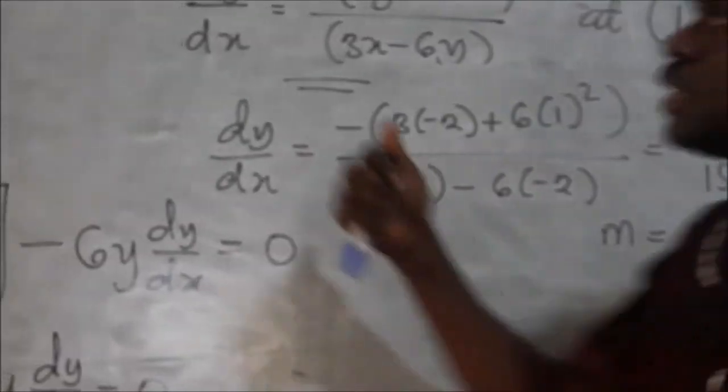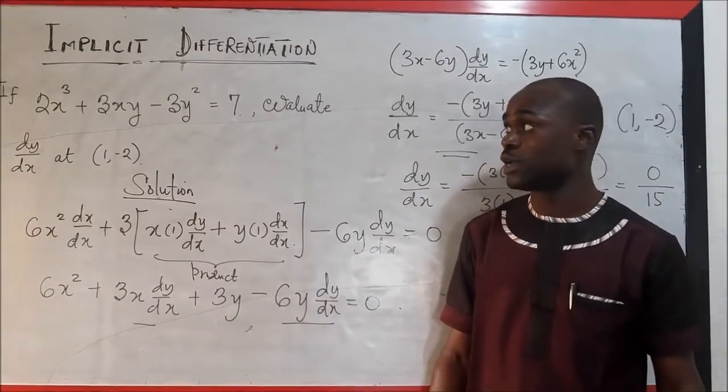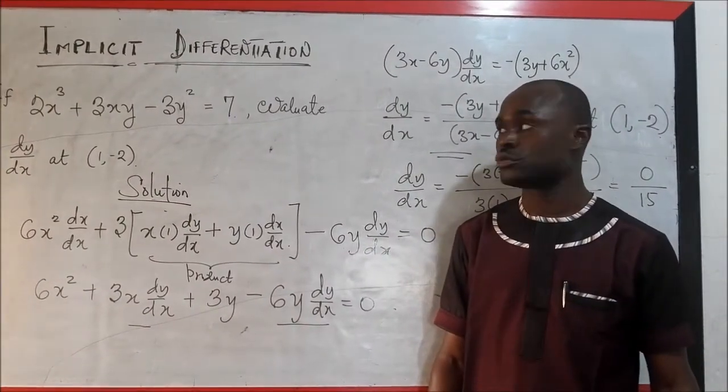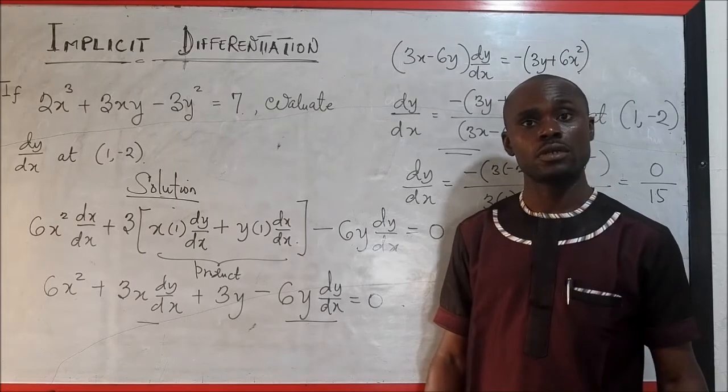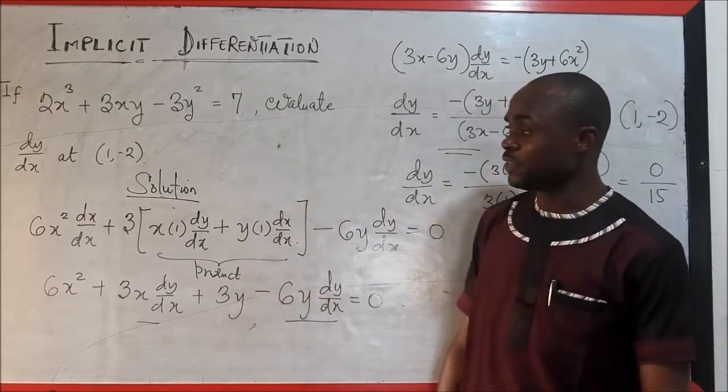And that will end up giving us 0. So the slope of this particular function is actually equals to 0. So if we are to have a gradient to that curve, actually a curve, the slope is going to be equal to 0. So that is an implicit differentiation for you.